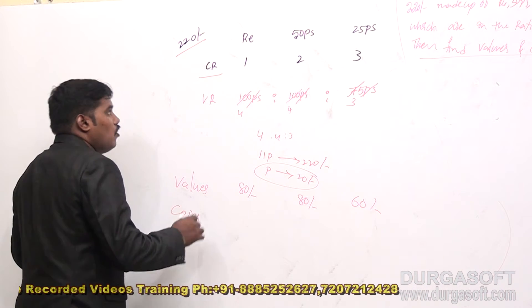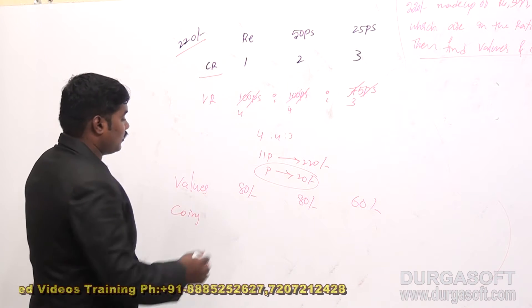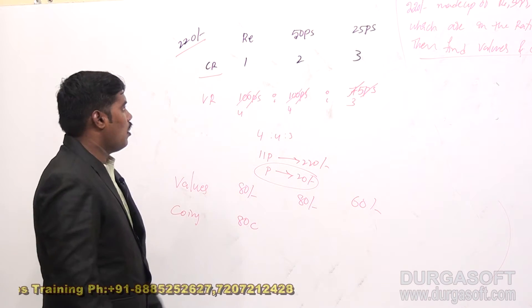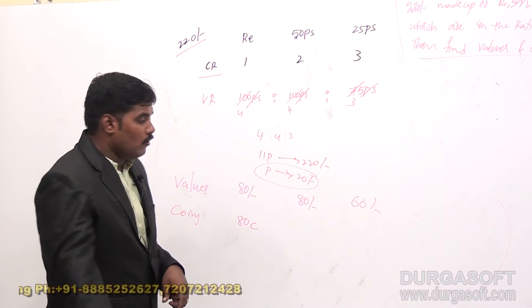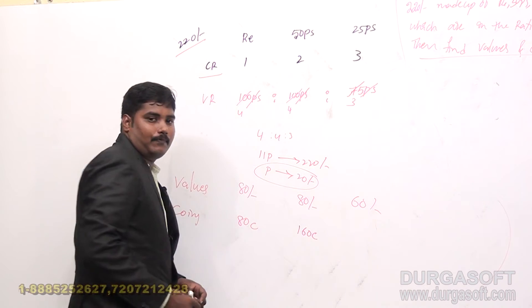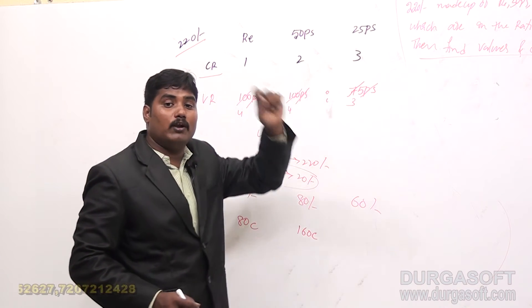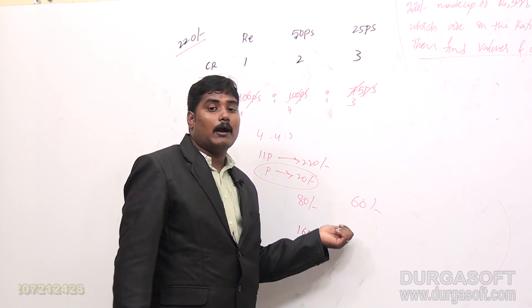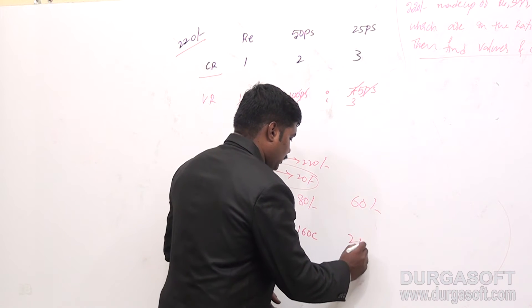Now for the coins: for the completion of 1 rupee, number of 1-rupee coins is 1; for 80 rupees, that is 80 coins. For 1 rupee, number of 50-paise coins is 2; for 80 rupees, that is 160 coins. For 1 rupee, number of 25-paise coins is 4; for 60 rupees, 60 times 4 equals 240 coins.